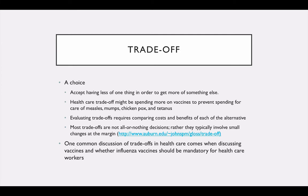Healthcare trade-offs might be spending more on vaccines to prevent spending for the care and treatment of measles, mumps, chickenpox, HPV, or any number of vaccine-preventable diseases. You spend now on vaccine development and prevention so that you don't spend later for not only the cost of treatment but the lost time that a person can't work because they're ill. Evaluating the trade-offs requires comparing the cost and benefits of each of the alternatives — not just the one you want but all the alternatives that you're evaluating. And most trade-offs are not all or nothing; they typically involve small changes at the margins.